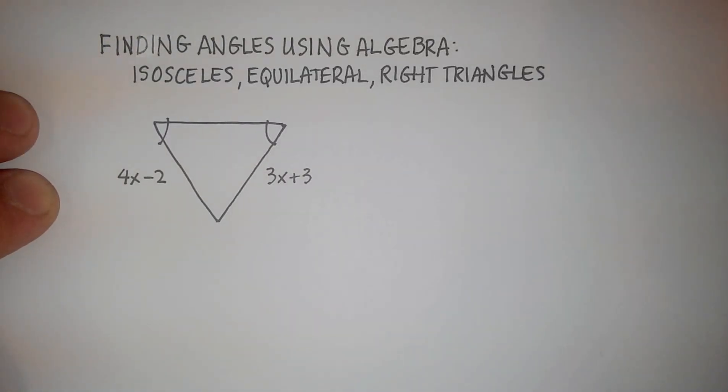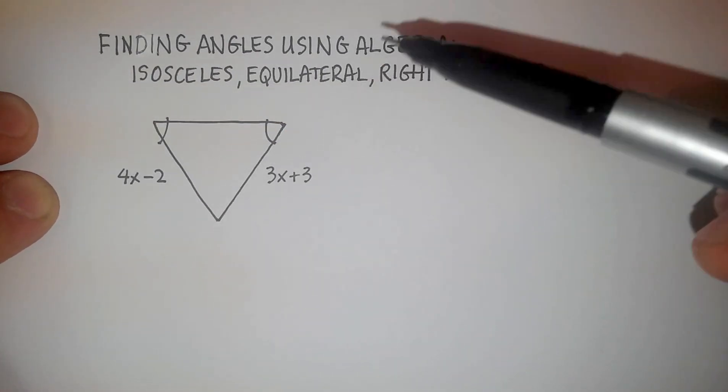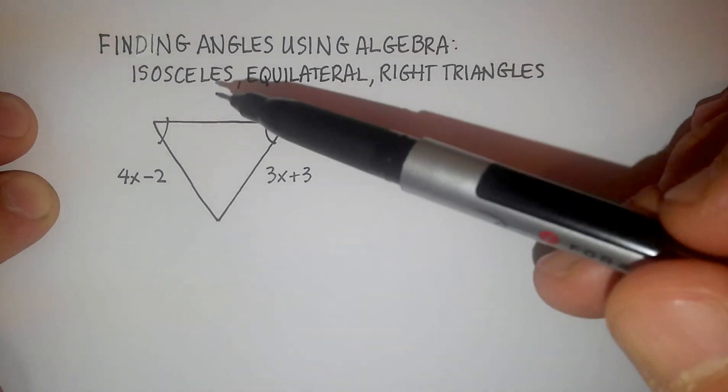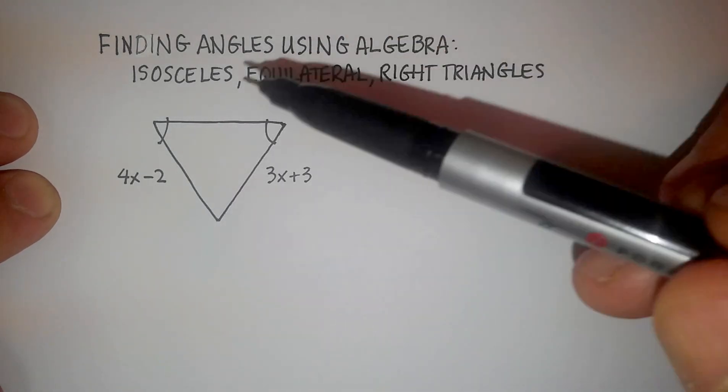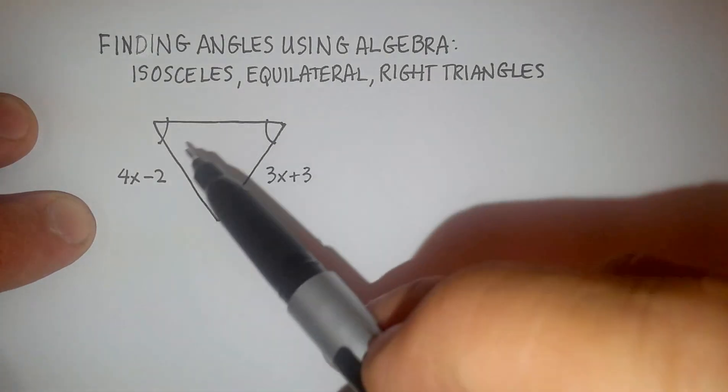Okay, so in this video we're going to go over the thought process that you need to figure out how to use algebra when you have an isosceles, equilateral, or right triangle in a problem similar to this.